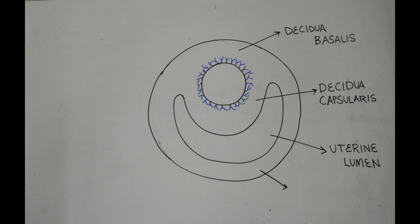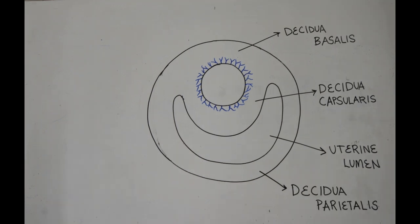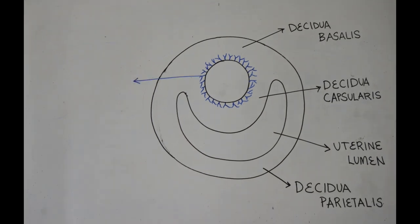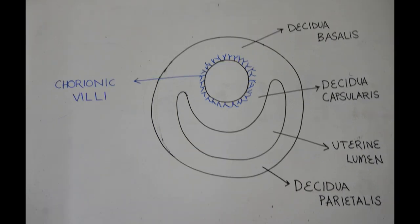...is called decidua parietalis. The essential functional elements of the placenta are very small finger-like processes or villi.